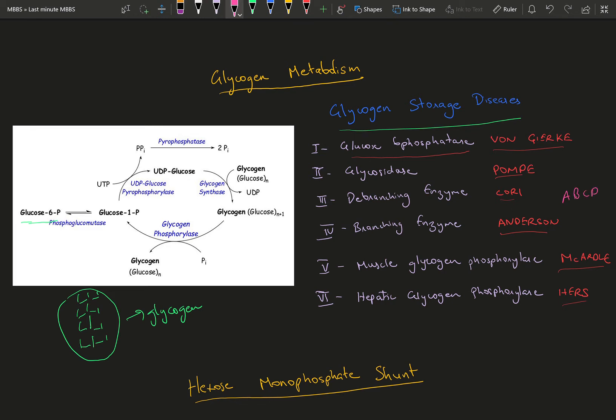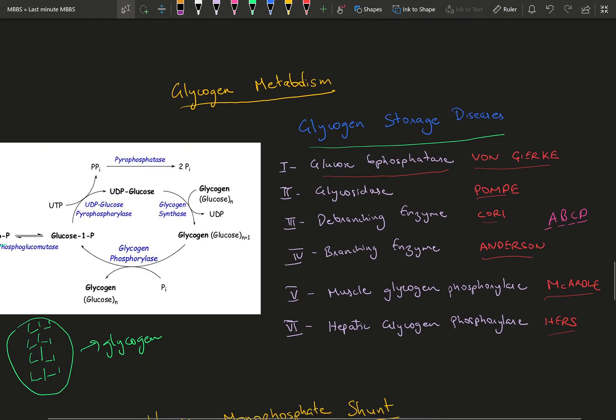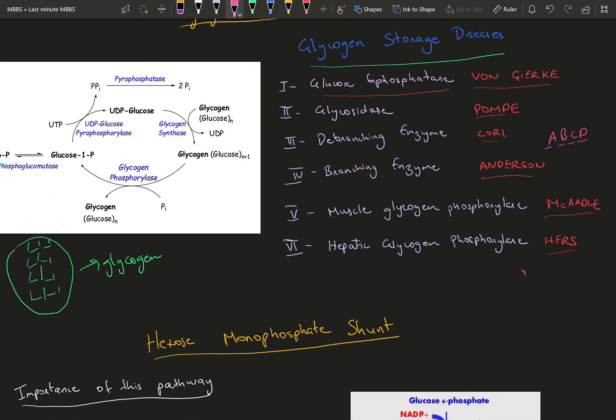But the next two you can remember with a small trick which I use: A, B, C, D. Anderson's disease is going to have a deficiency in branching enzyme. Corey's disease is in debranching enzyme. And then for the fifth and sixth it's M for M and H for H. Muscle for McCardell and Hepatic for Herz disease.